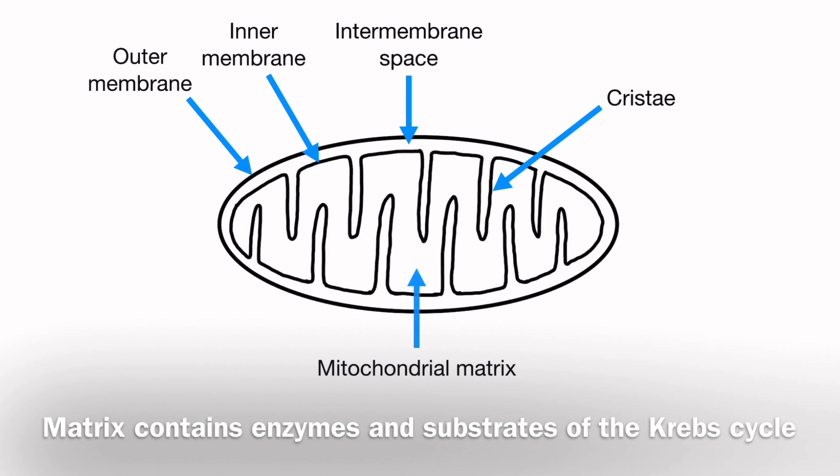Finally, inside the mitochondrion, we find the mitochondrial matrix. This is an area that contains enzymes and substrates that are used in the chemical reactions of respiration, and specifically, the Krebs cycle.